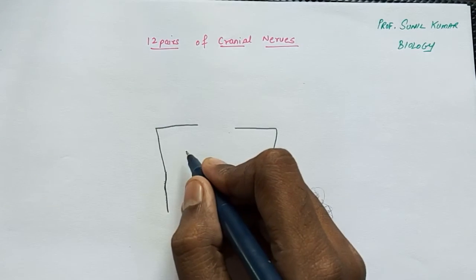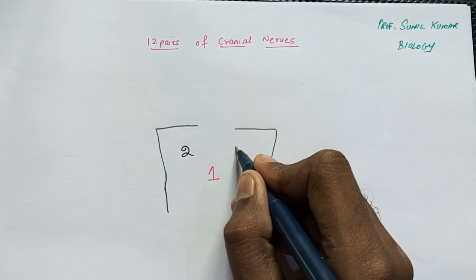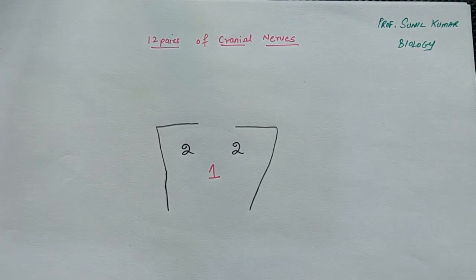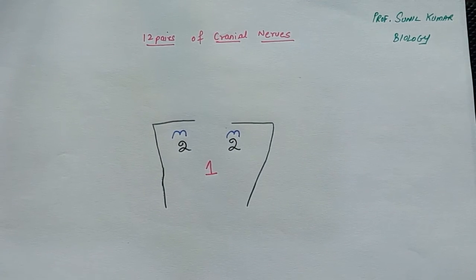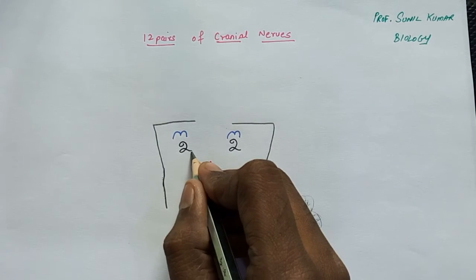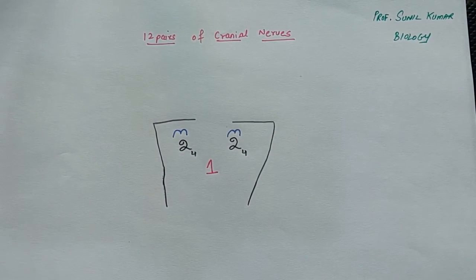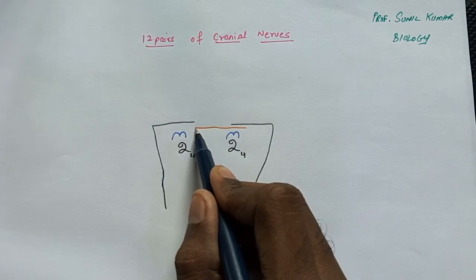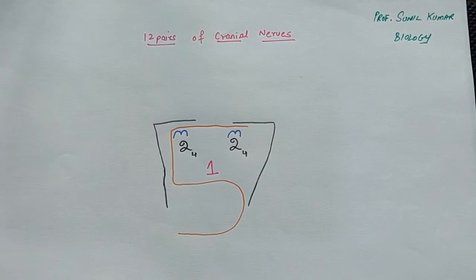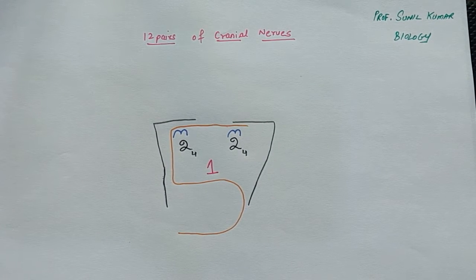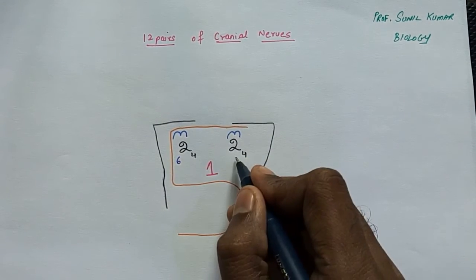After that we write number two — like the eye — then number three on the eyebrows, so number three is the oculomotor. Number four is placed just below number two, near the eye area. When writing number five — the trigeminal — we make it somewhat bigger because it covers most of the face.